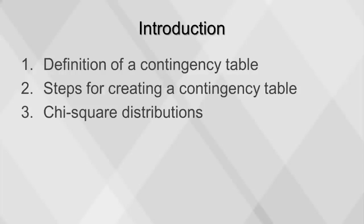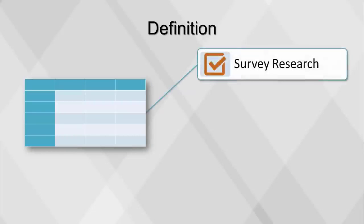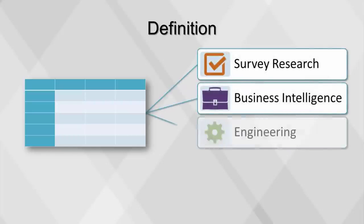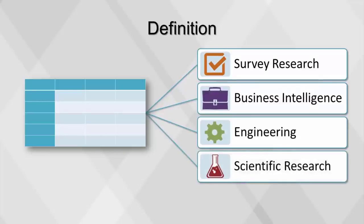This video will cover contingency tables — first the definition, then the steps for creating one, and finally chi-square distributions. In statistics, a contingency table is a type of table in a matrix format that displays the multivariate frequency distribution of variables. Contingency tables are heavily used in survey research, business intelligence, engineering, and scientific research. They provide a basic picture of the interrelation between two or more variables and can help find interactions.